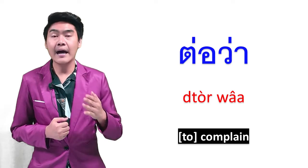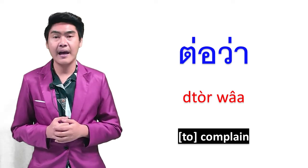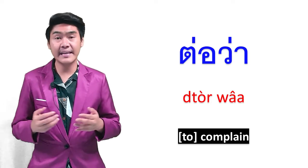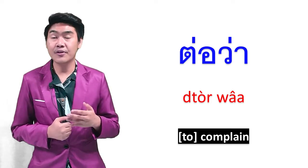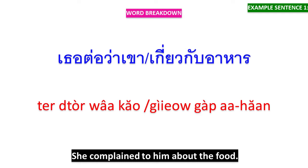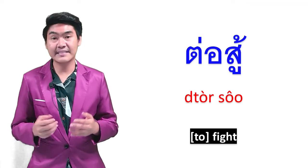Next is ต่อว่า. ต่อว่า means to complain in English. For example: เธอต่อว่าเขาเกี่ยวกับอาหาร — เธอต่อว่าเขา means 'she complained to him,' and เกี่ยวกับอาหาร means 'about the food.'